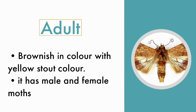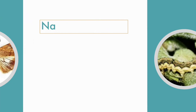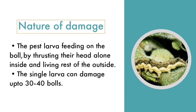Nature of Damage: The larva feeds on the bolls of the crop by thrusting its head alone inside and leaving the rest of the body outside. A single larva can damage up to 30 to 40 bolls of crop.